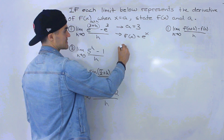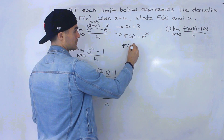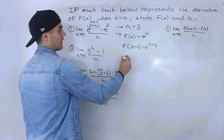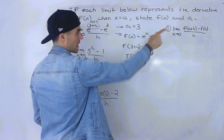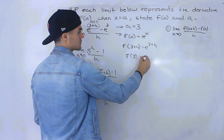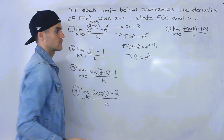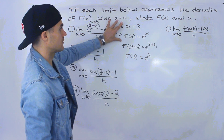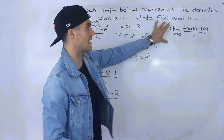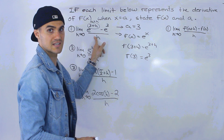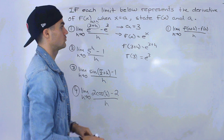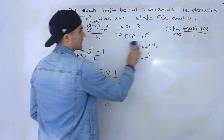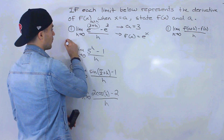Notice that f(3+h) would be e to the power of (3+h), which we have. And then f(3) — we're subtracting f(a), or f(3) in this case — would be e to the power of 3. Once you state this, you can verify by plugging back in and making sure you get the exact same limit. So that's the answer for number one.